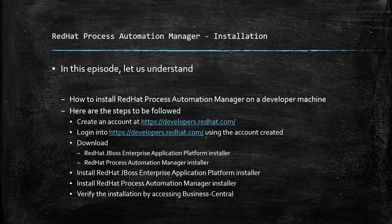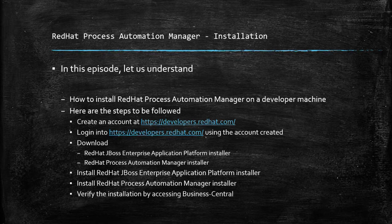Once you have downloaded the two installers, use the installer for JBoss Enterprise Application Platform to install that software first. Once you have completed that installation successfully, then install Red Hat Process Automation Manager. As a last step, you can verify the installation by accessing the Business Central. We'll perform all these steps and see how to install Red Hat Process Automation Manager on a developer's machine.